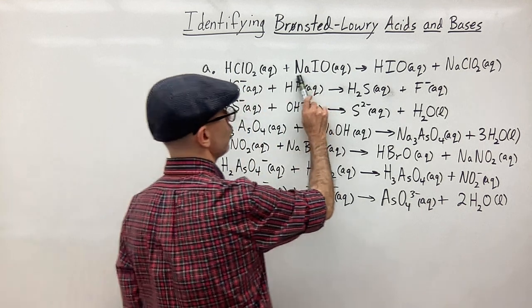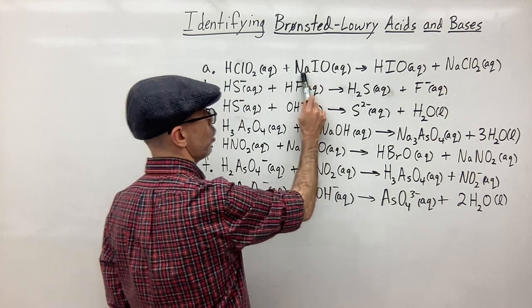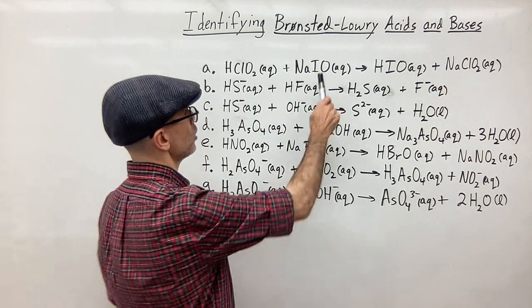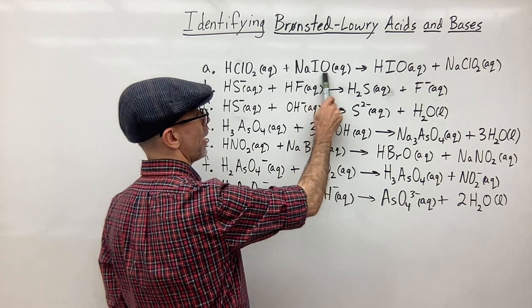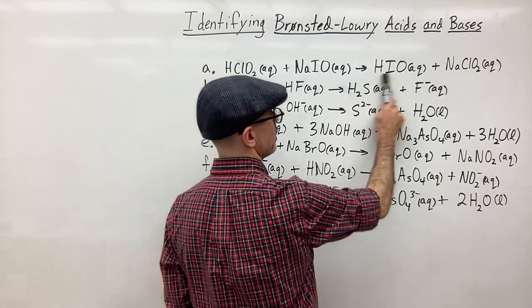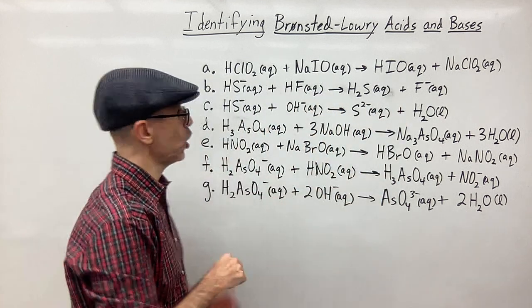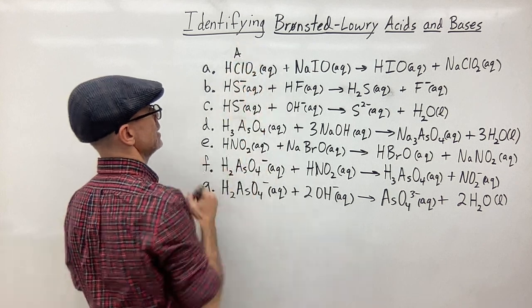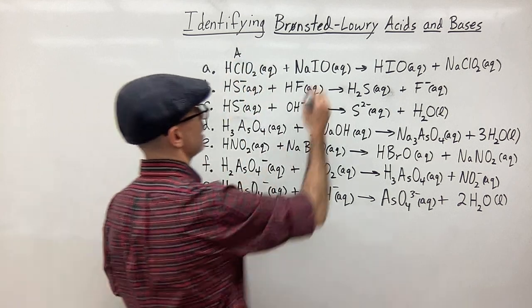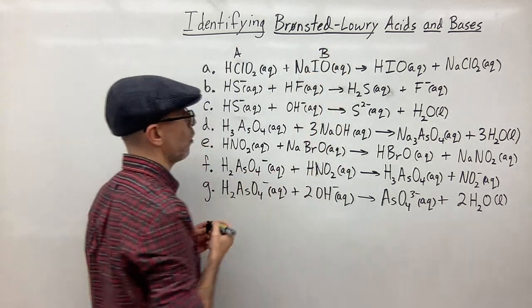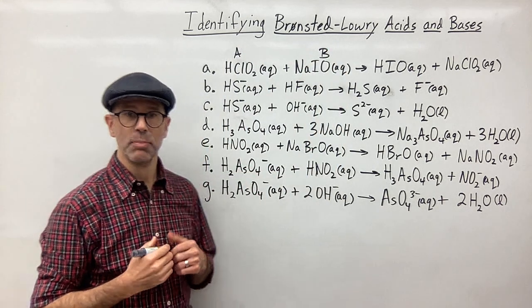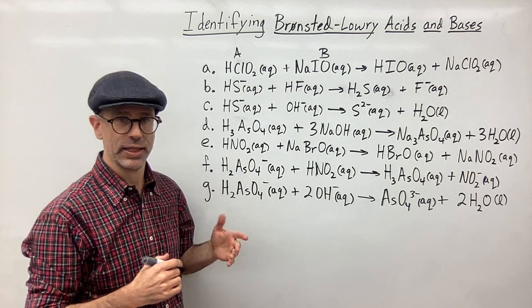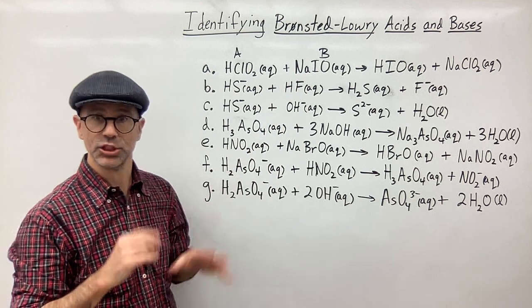Where did the hydrogen go? If you look over here, we have sodium — sodium is here and here, so that's not really doing anything, it's a spectator ion. But look at the IO⁻: the IO⁻ picked up the hydrogen. So that means that HClO₂ is acting as the acid, and the IO⁻ is acting as the base. The sodium there is just a counter ion; it's just there to balance charge.